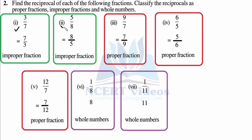9/7 — numerator to denominator and denominator 7 to the numerator, it is proper because the numerator is smaller than the denominator. Again flip it — it becomes 5/6, which is proper because the numerator is a smaller value. Over 7 becomes 7/12, it is proper because the numerator is smaller than the denominator. That was your fifth part.